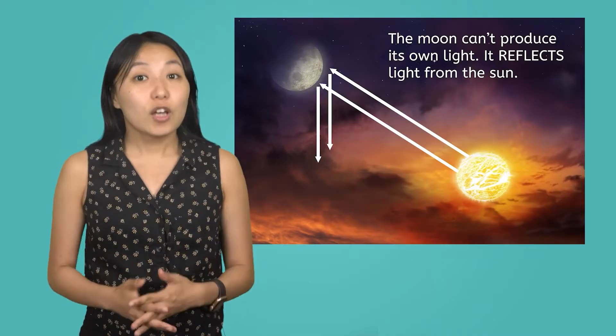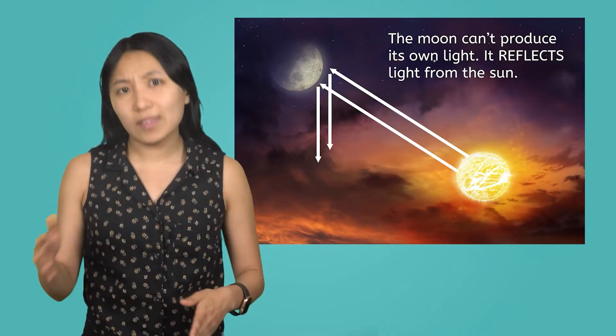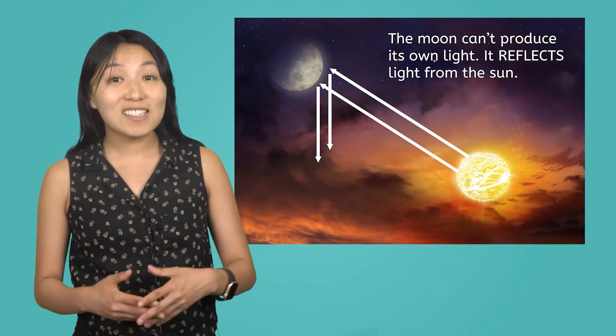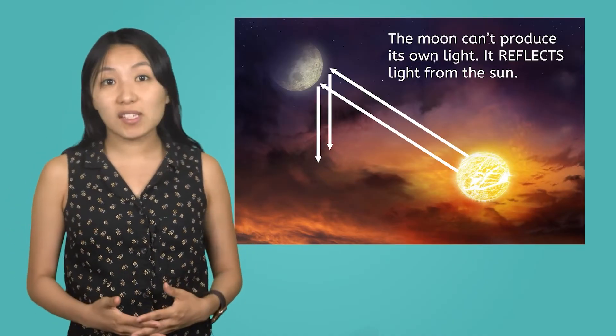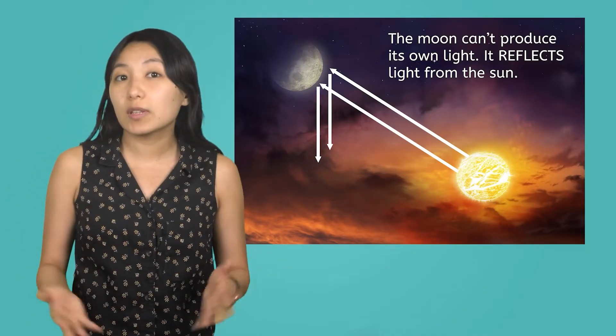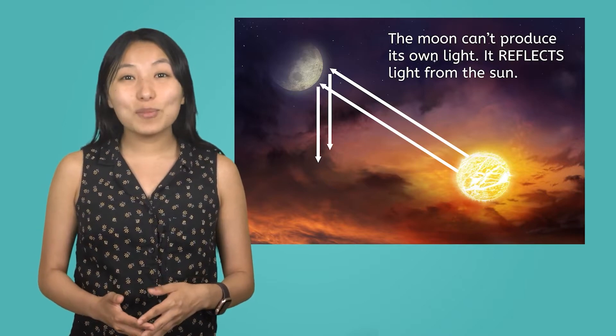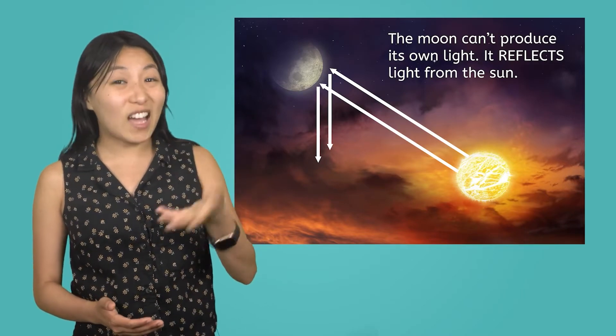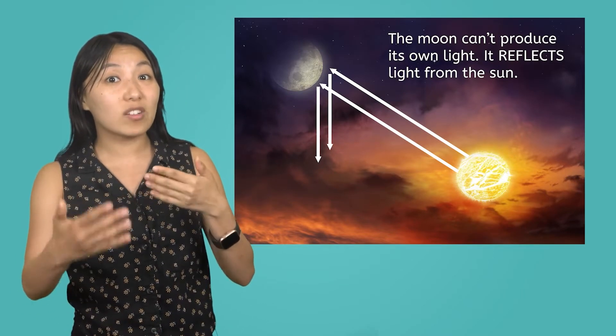As we've learned, the moon is a rock, so unlike the sun, it can't produce its own light. Instead, it reflects light from the sun, like a giant mirror in the sky. When you see the moon glowing at night, you're actually seeing sunlight bouncing off its surface.